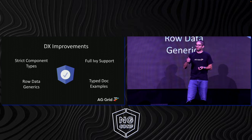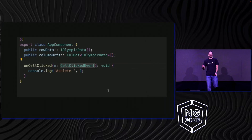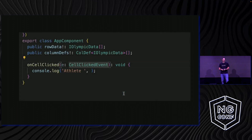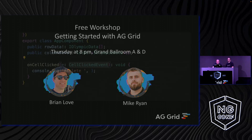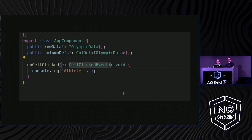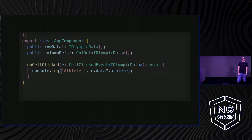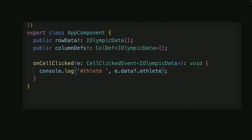And the thing which shipped in version 28 just a few months ago is row data generics — something I'm really happy we managed to get in. Now you can pass it your row data type. With your row data property, you give that row data with an interface. And you can also pass it to all of our other interfaces like this, and your data property will now be fully typed. So you're going to get much more accurate type checking, both on your component and in any of your methods.